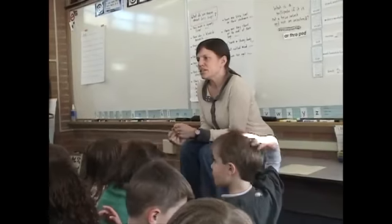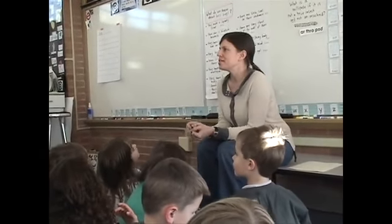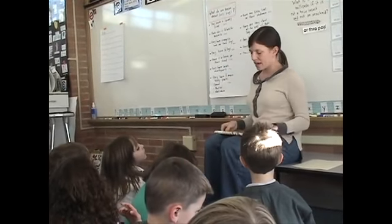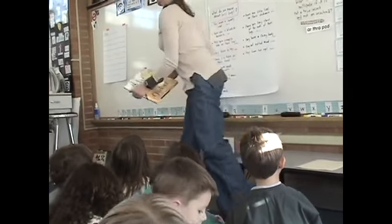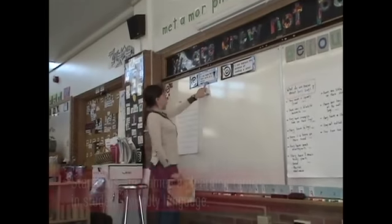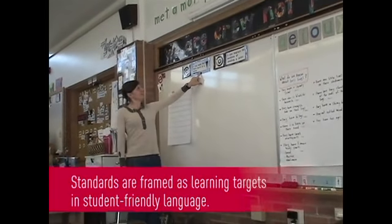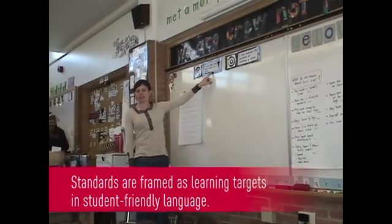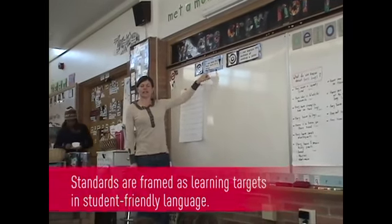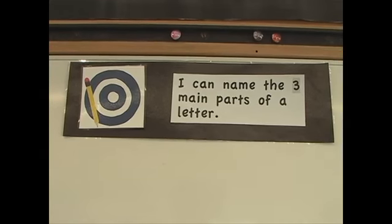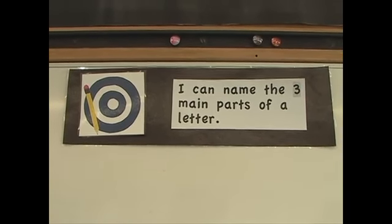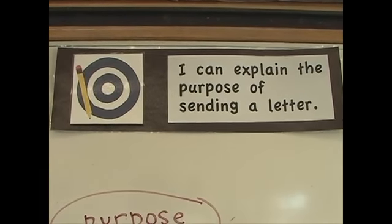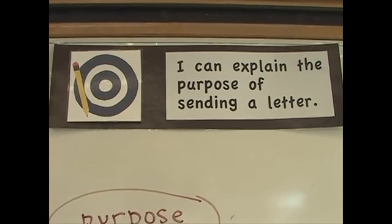Just to get us settled, I'm going to share a couple pages from a book that has something to do with our writing target today. Our first writing target says: I can name the three main parts of a letter — see if you can name them to yourself quietly. Our second target is: I can explain the purpose or the reason why we sent the letter.